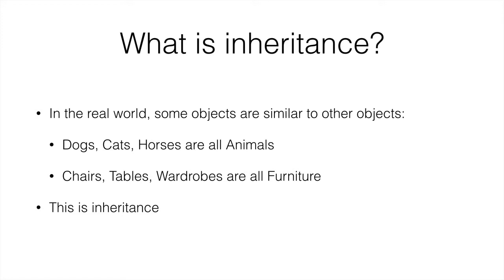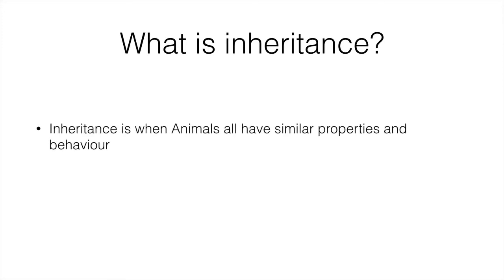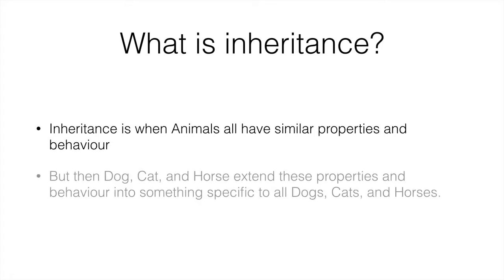So this is inheritance. Inheritance is when animals all have similar properties and behaviour, but the specific dog, cat and horse extend these properties and behaviour into something specific to dogs, cats or horses. So animal has some properties and some behaviour that is common to dogs, cats and horses, but each one of these have different properties and behaviour to all the other ones.